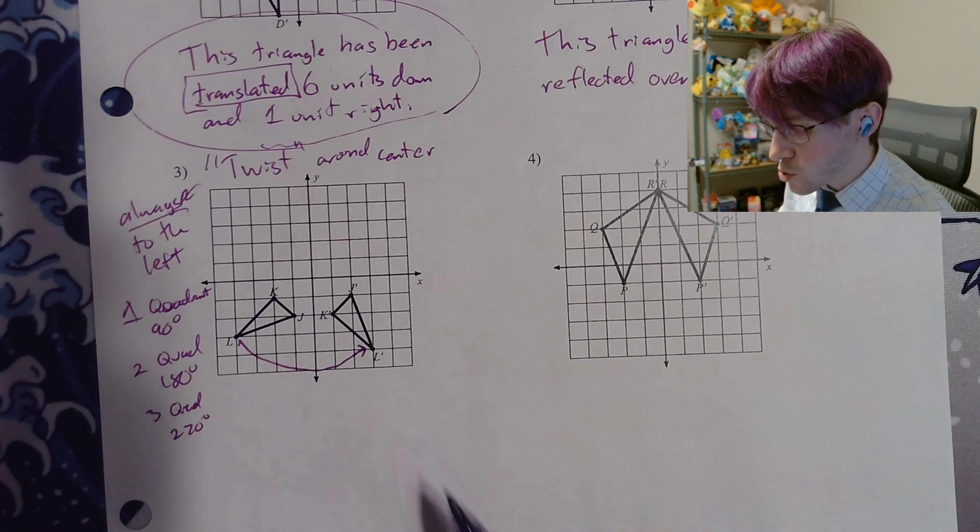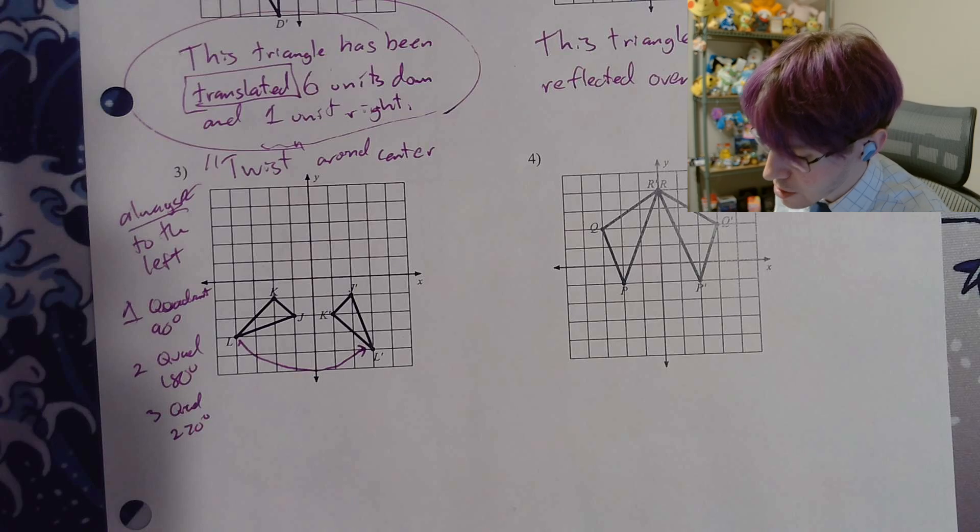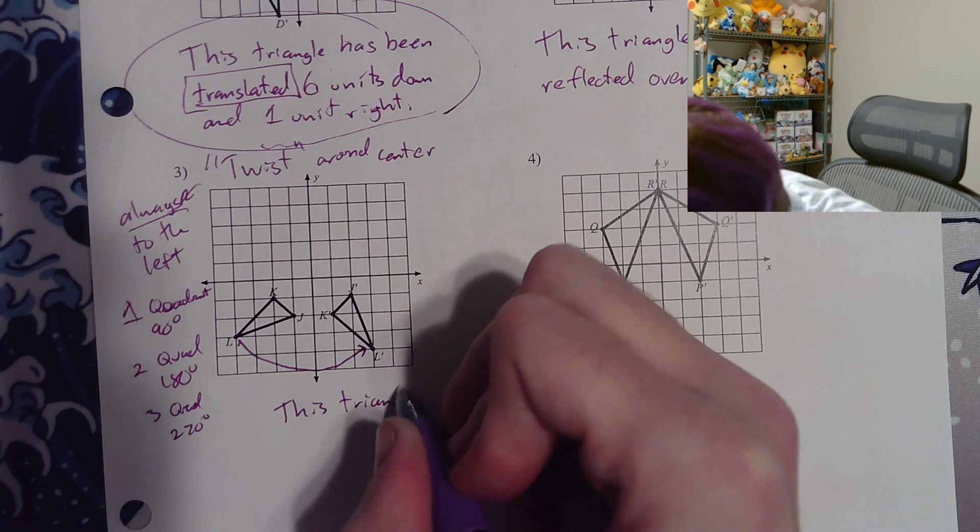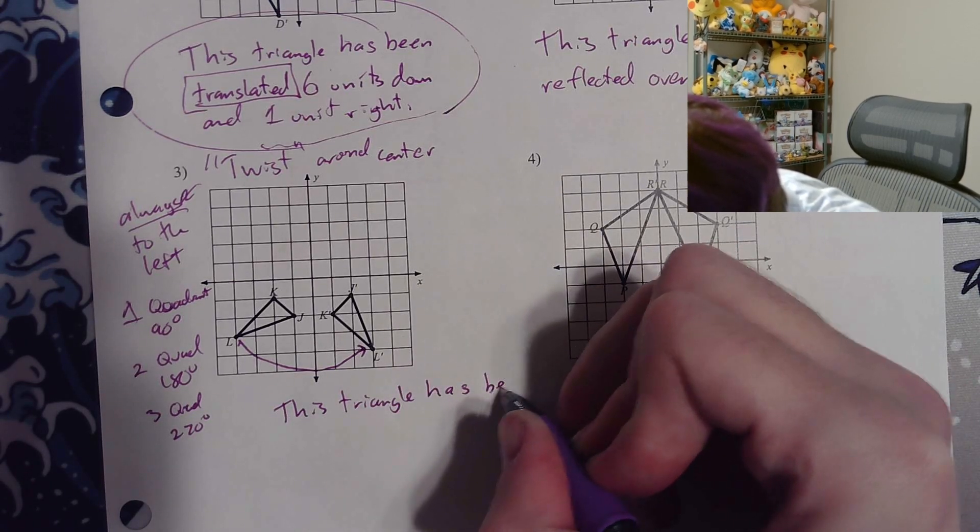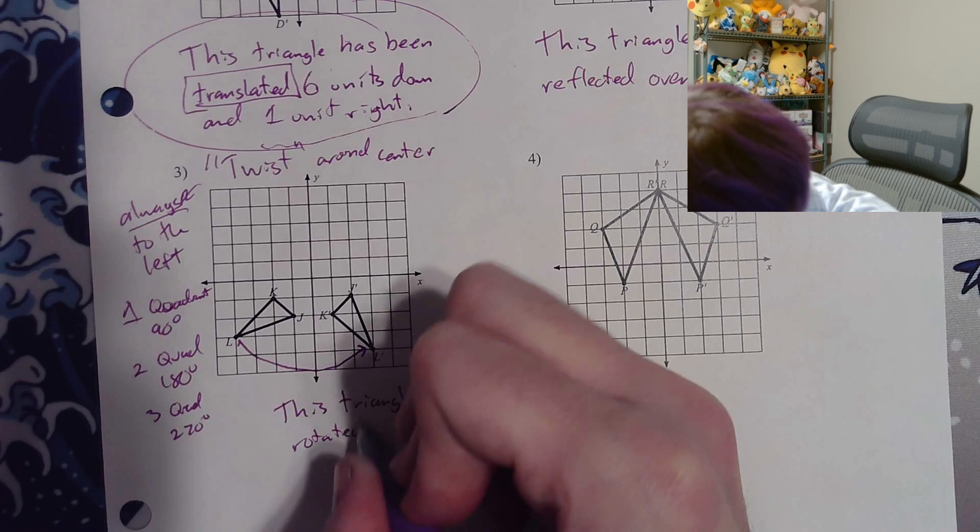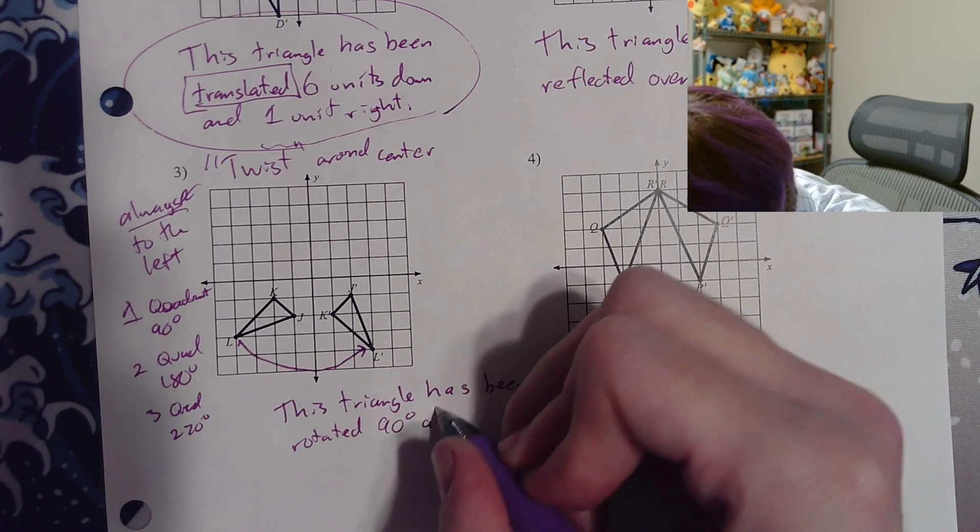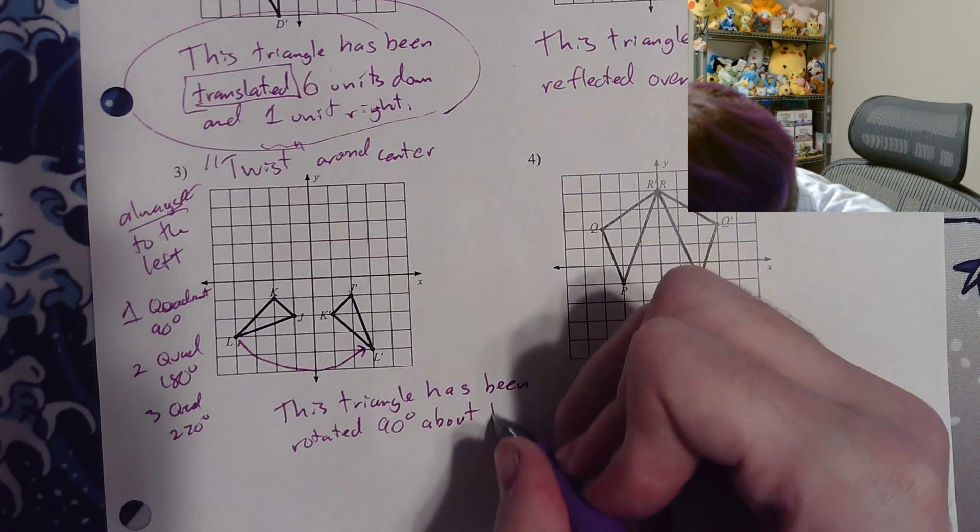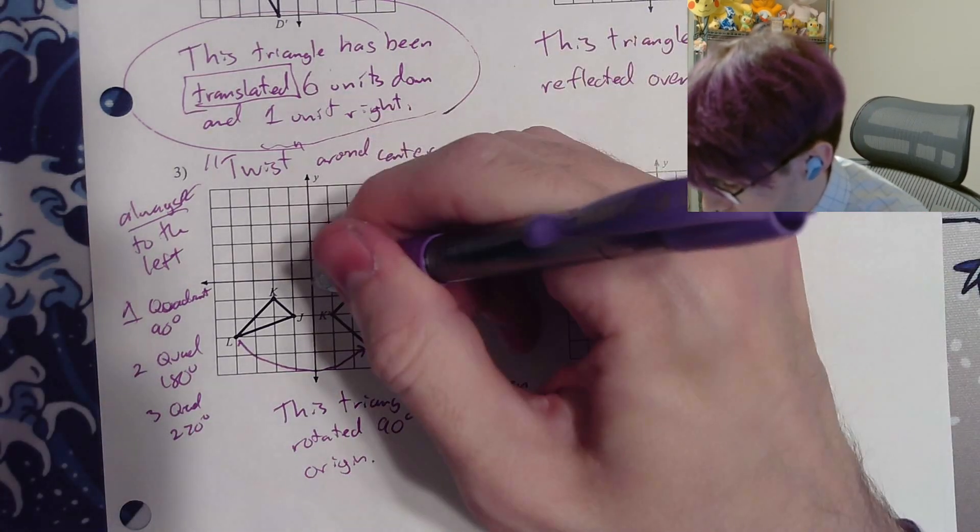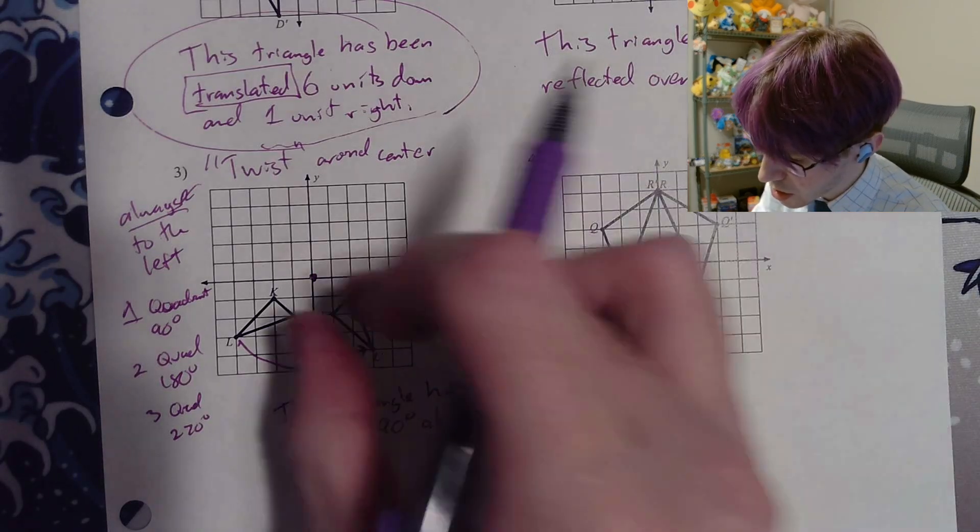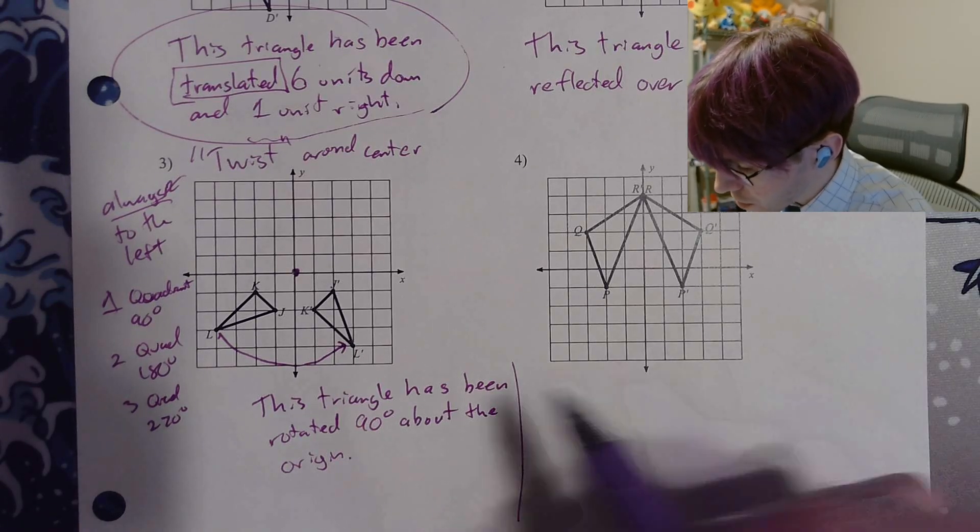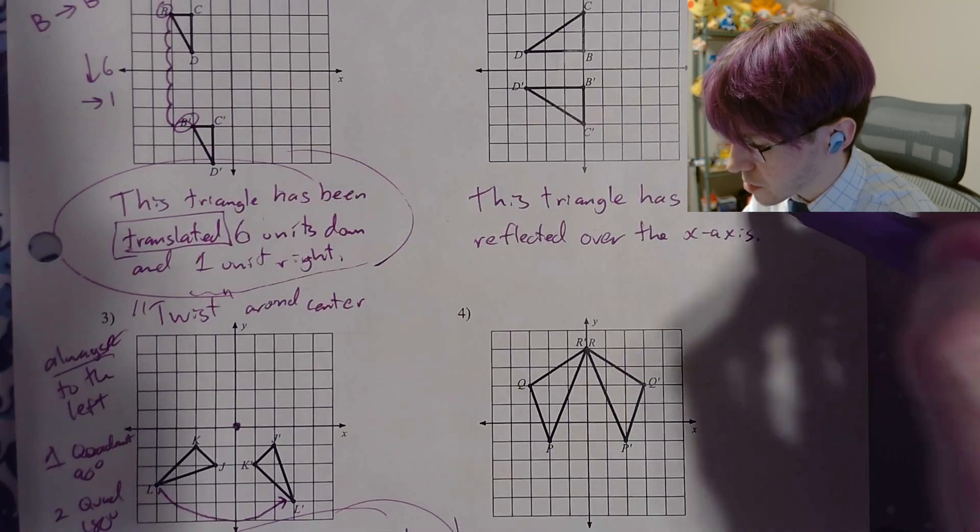Okay. Actually, this one, you moved one quadrant, so it's going to be 90 degrees. So this triangle has been rotated 90 degrees. And we're always going to say about the origin. You're always doing it around the center and the word is origin. Again, that middle dot right there is the origin. You're twisting it around that center part. All right. So I did my full sentences for all of these ones, because those are the correct answers on the actual test.